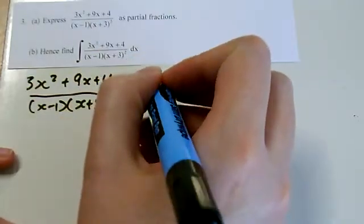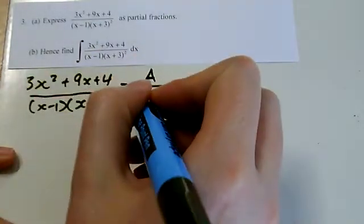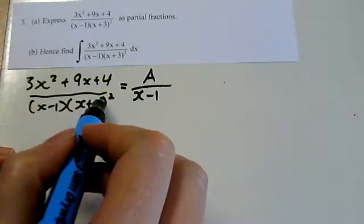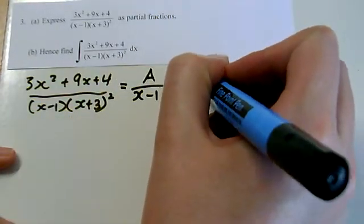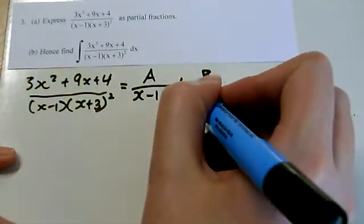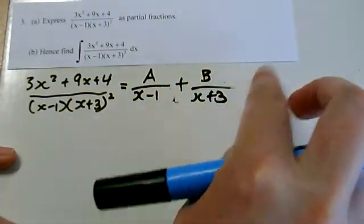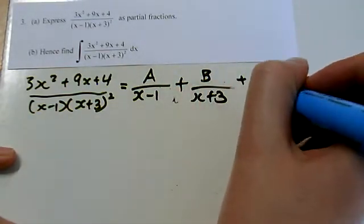So we'd have A over this one bracket over here. Now if there's a squared one, you need B over just one of those brackets, plus C over that bracket squared.